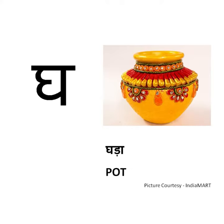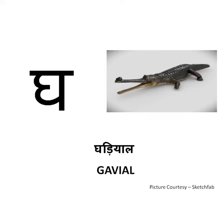Gha se Ghada. Ghada means pot. We keep water in the pot. A pot is made out of clay. Gha se Ghadiyaal. Ghadiyaal means gavial. It looks like a crocodile and it is also called fish-eating crocodile.